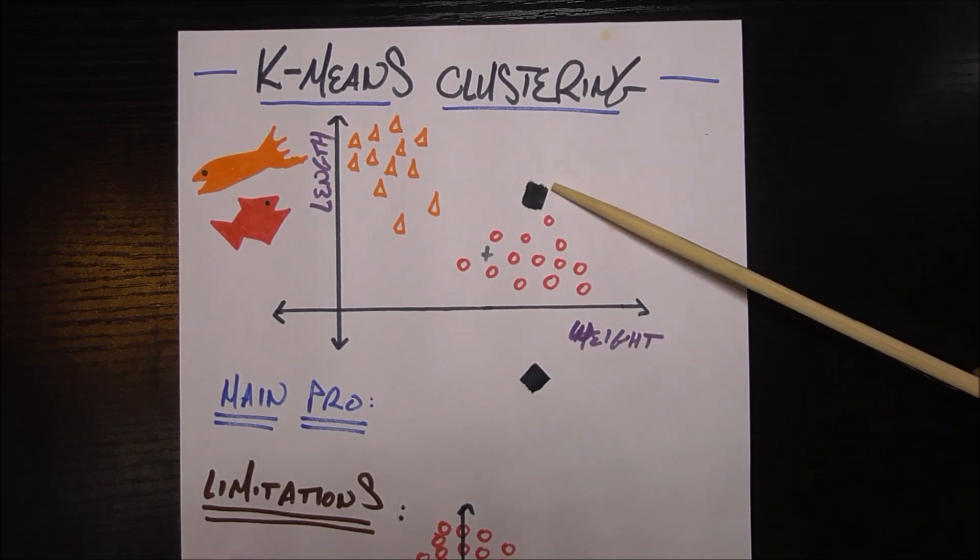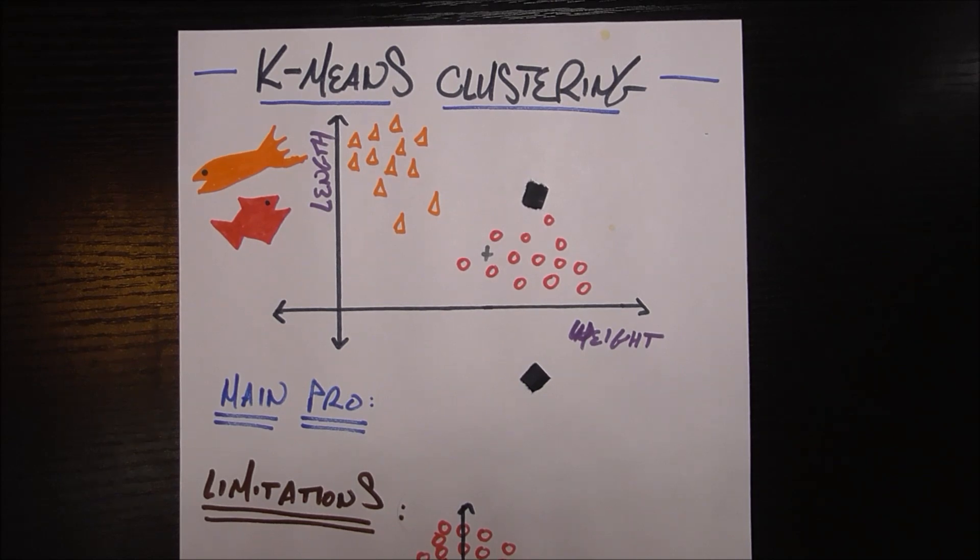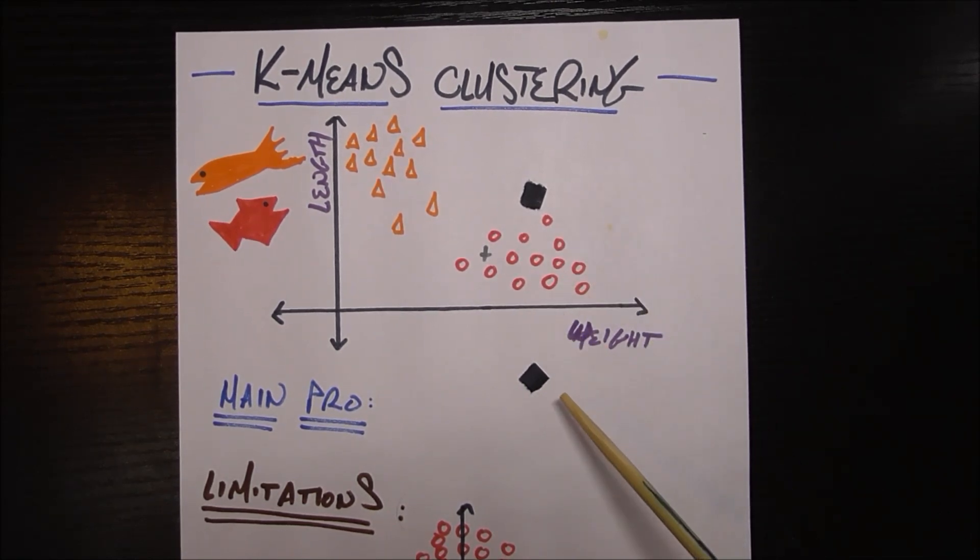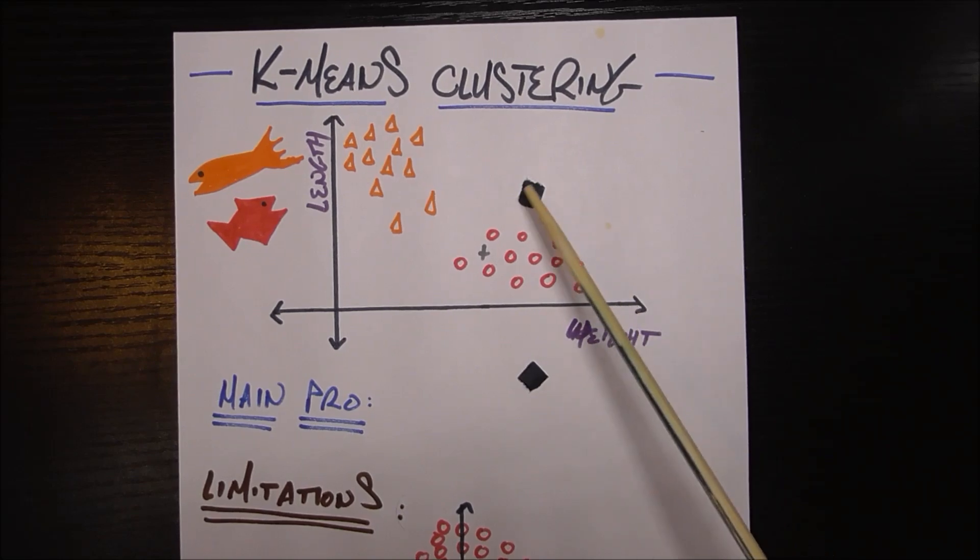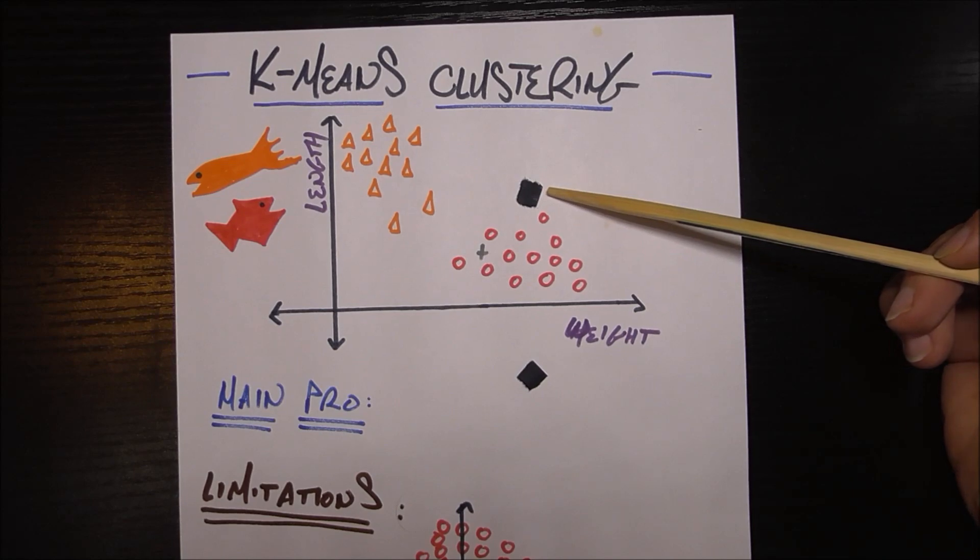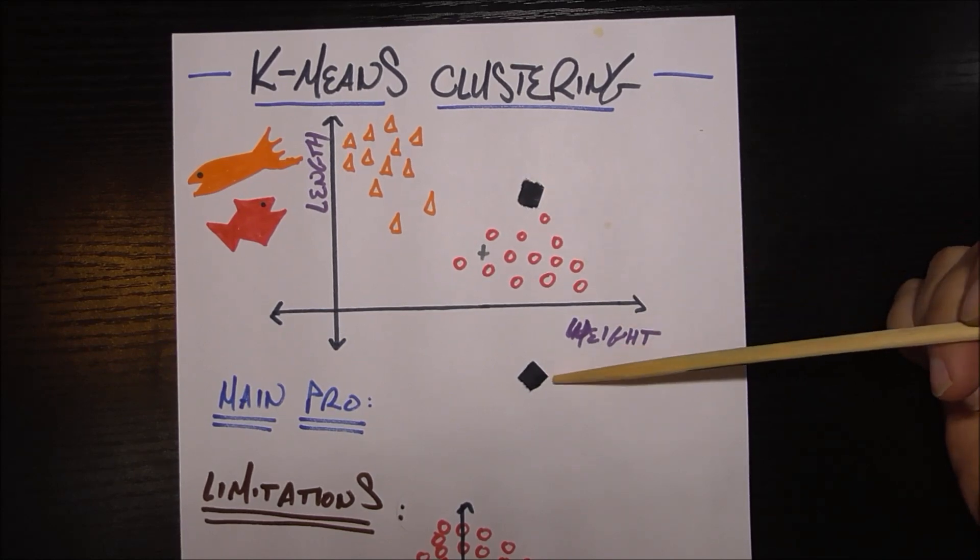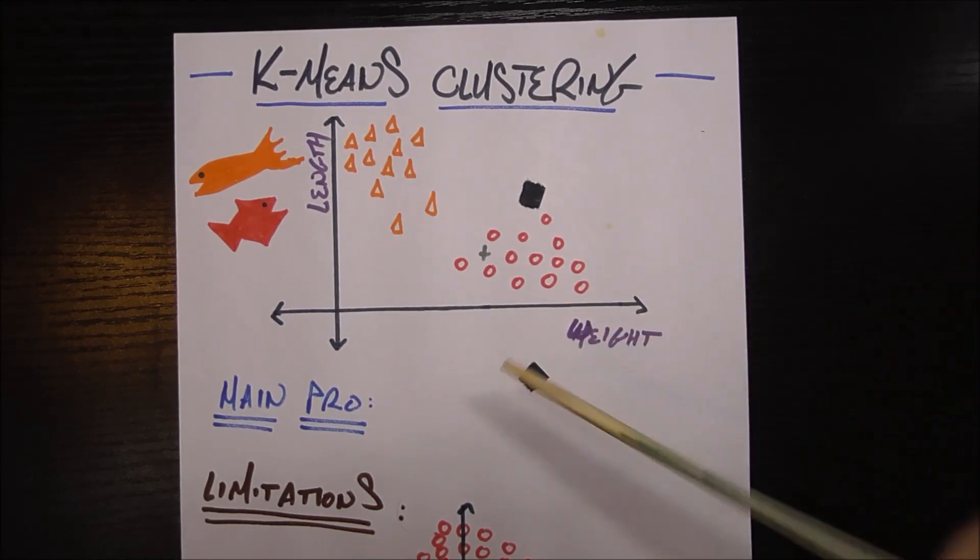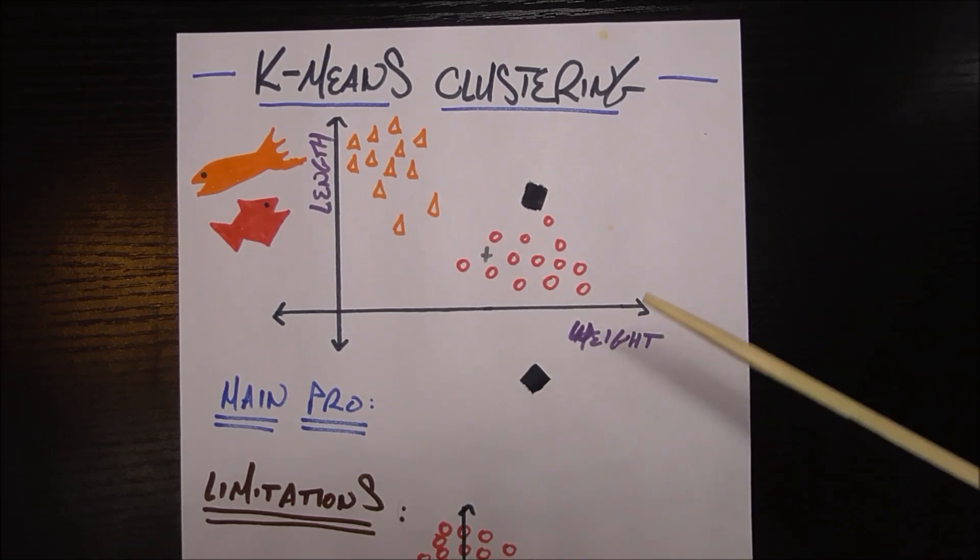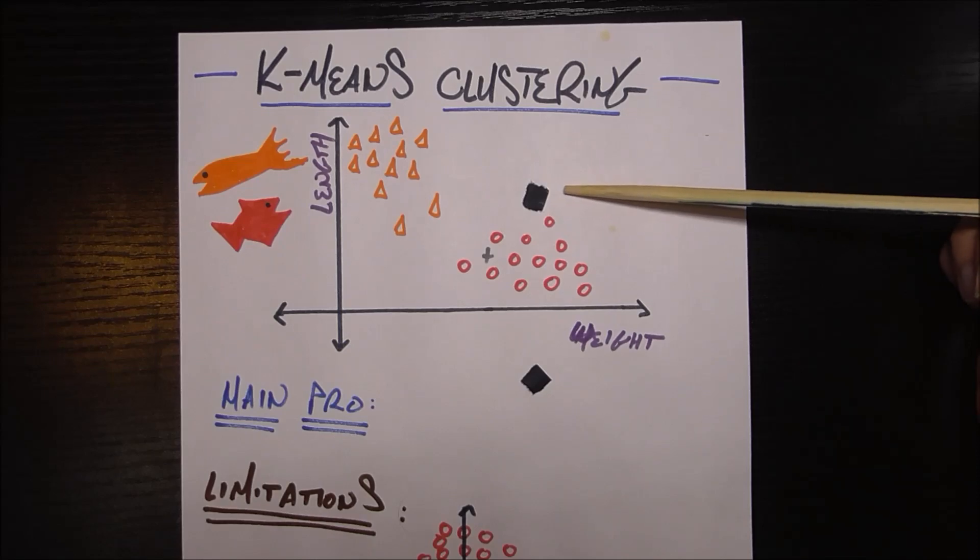So once you have these two values, this mean one, mu one and mu two, you can think of it that way, what you do for each point in the plane is figure out, is it closer to the first mean or the second mean? And you go ahead and assign it to that point. So for example, if this top one is the one that represents salmon and the bottom one represents tuna, then any time a point of all these points we see is closer to the bottom one, we say it's a tuna. If it's closer to the top one, we say it's a salmon.